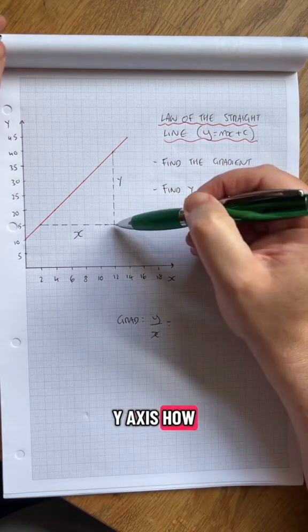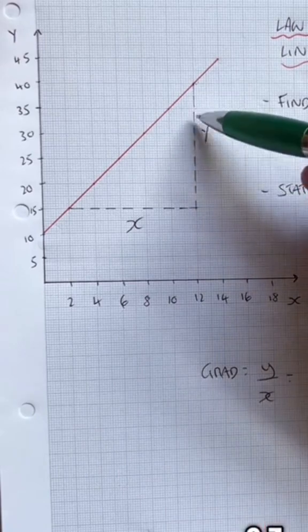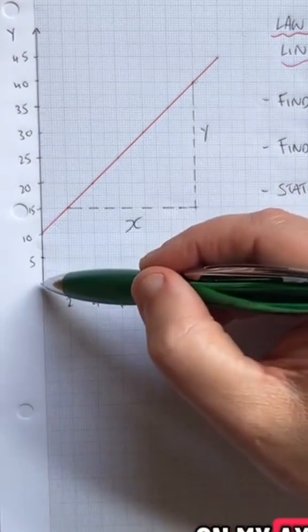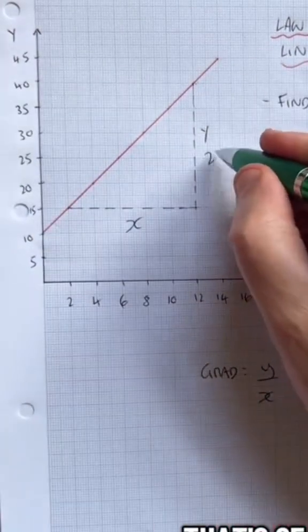So here's my y, look, y-axis. How many squares? One, two, three, four, five. On the y-axis, one, two, three, four, five. That's 25 on there.